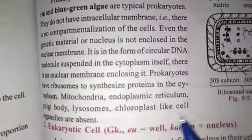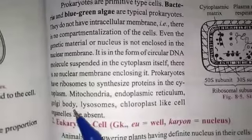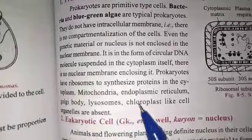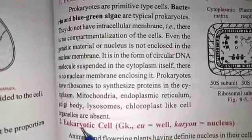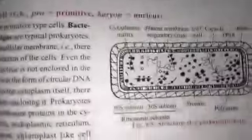Mitochondria, endoplasmic reticulum, Golgi body, lysosome, and chloroplasts — these cell organelles are all absent in prokaryotic cells.